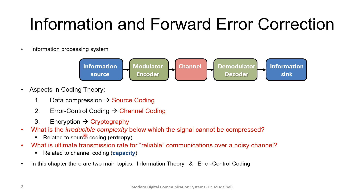Let's ask a few key questions. What is the irreducible complexity below which a signal cannot be compressed? If we are dealing with compression, we are dealing with information theory — the concept of entropy is very handy there. The second question is: what is the ultimate transmission rate for reliable communication over a noisy channel? That deals with error control, and the concept of capacity becomes important. So entropy is for compression and capacity is for error control coding.